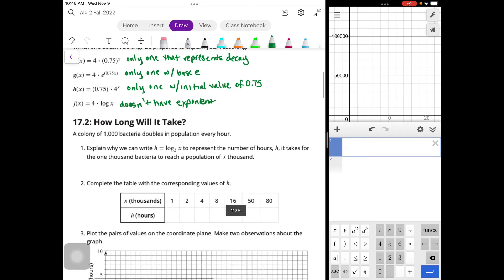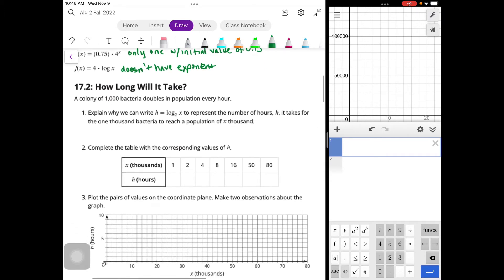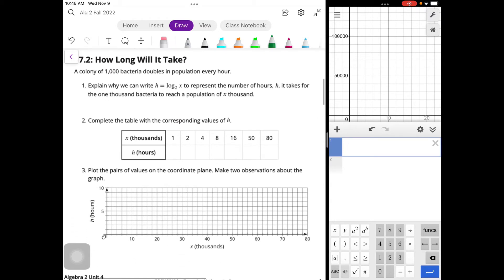All right, 17.2. How long will it take? A colony of 1,000 bacteria doubles in population every hour. Explain why we can write H equals log base 2 of X to represent the number of hours H it takes for 1,000 bacteria to reach a population of X thousand.